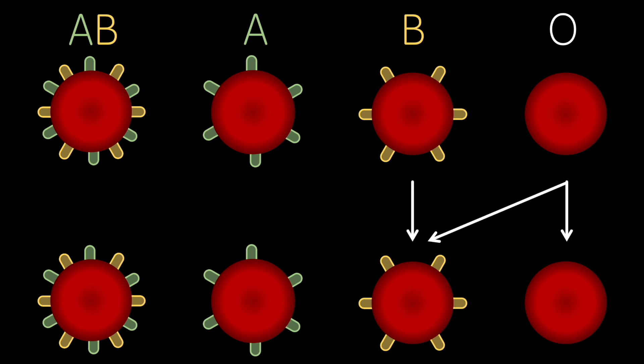Type B patients can receive blood from type B or type O donors as they only have anti-A antibodies.